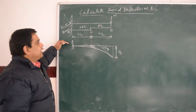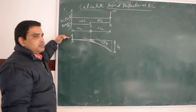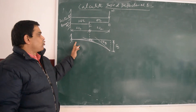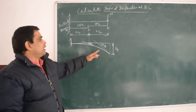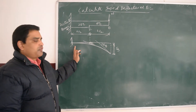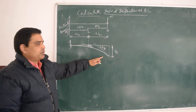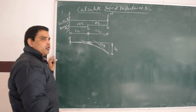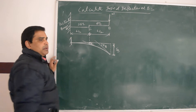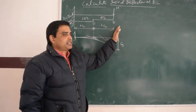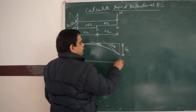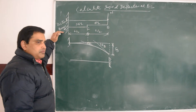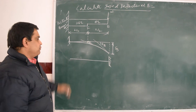For a cantilever beam, the shape of the deflected curve is a circular arc, and this deflected curve is also called the elastic curve. The shape of the bending moment diagram is a triangle — that is the key difference between the two. For the conjugate beam, the fixed support becomes free and the free support becomes fixed, so it is an imaginary beam with swapped boundary conditions.